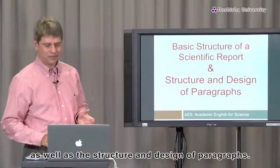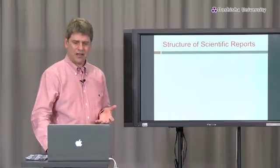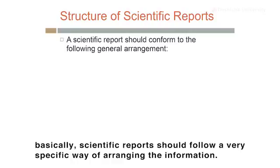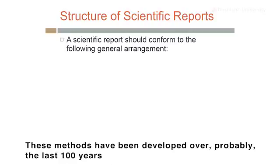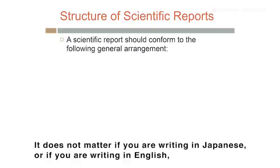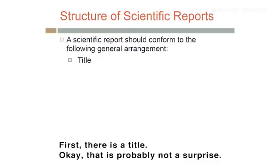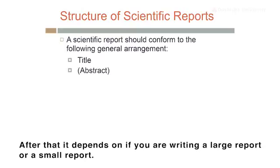The structure of a scientific report: scientific reports should follow a very specific way of arranging information. These methods have been developed over probably the last 100 years and have been pretty much fixed for at least half a century. It doesn't matter if you're writing in Japanese, English, French, or Spanish — the approach is almost always the same across science.